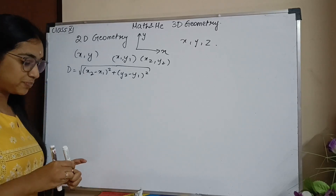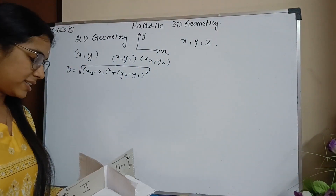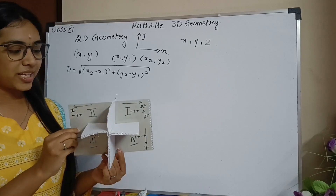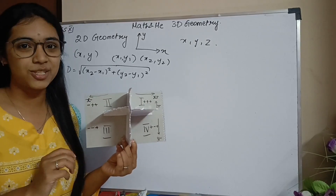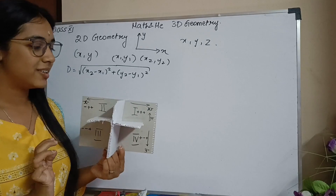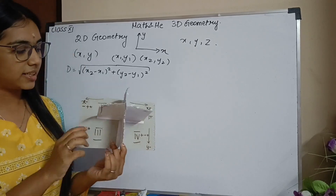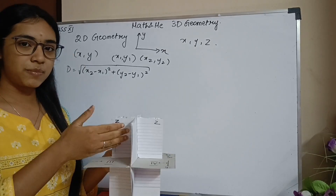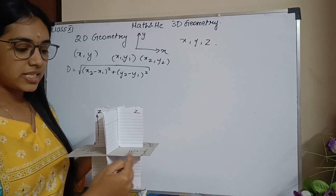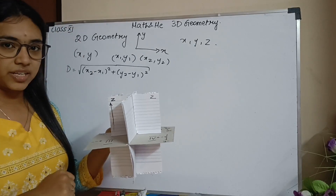Before we get into the details, I've made a very cost-effective model to help visualize this. So this is the model — it's a 3D structure of a 3D plane. In this model, the paper represents my z-axis, this is my x-axis, and this is my y-axis. So I have x, y, and z — going either positive z or negative z.